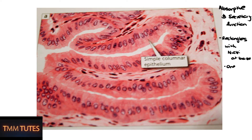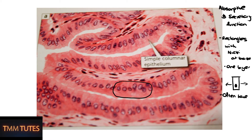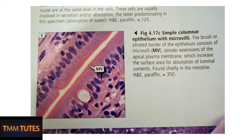Here's simple columnar epithelium. It's usually an absorptive or secretory type epithelium. It has rectangular cells with nuclei that usually sit at the base, in a single layer. You can see they still form the outer surface in that single layer, but they often have surface structures that specialize them to the tissue they're in.